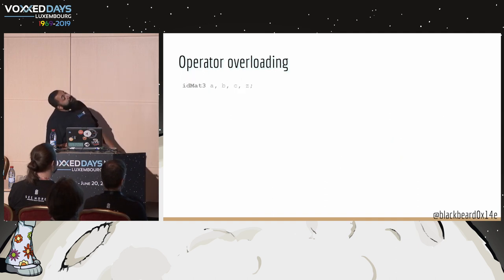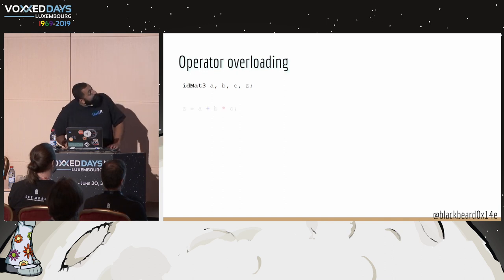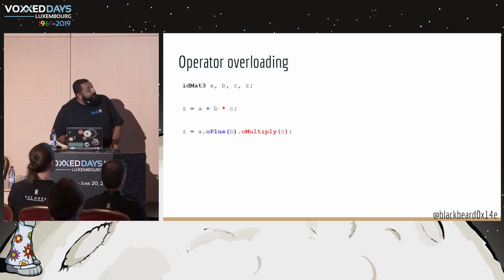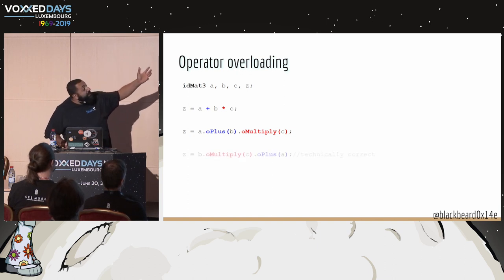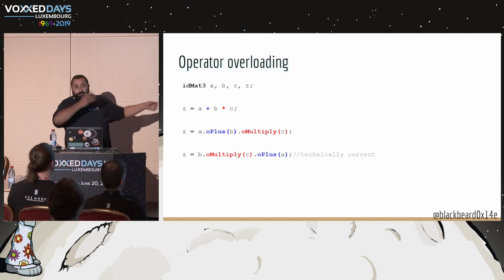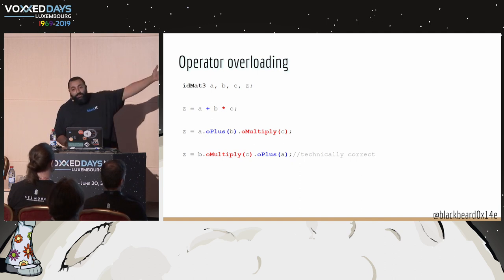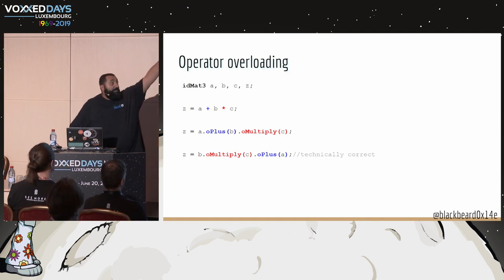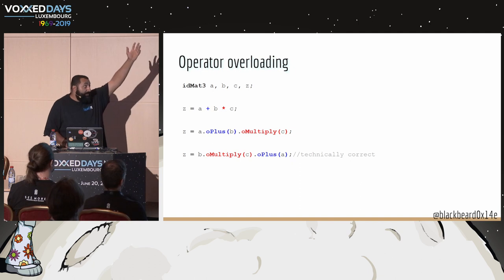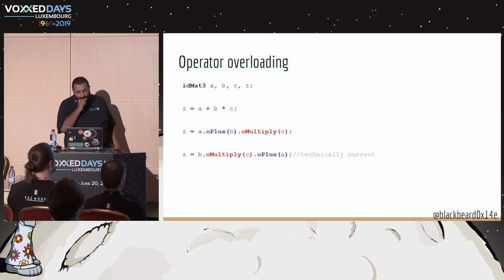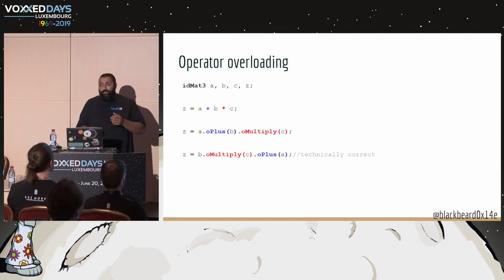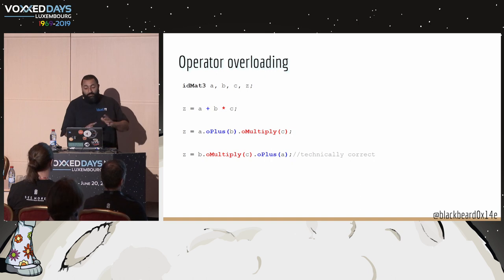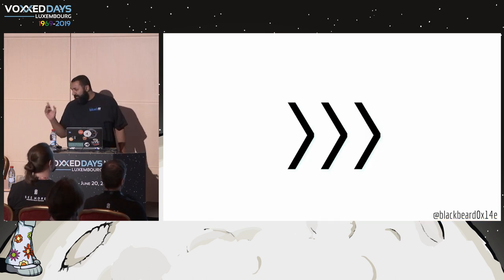A simplified version: if you write A + B * C with methods, the naive translation is wrong because of operator precedence — multiplication comes before addition. So the correct translation requires extra nesting. Writing it as methods instead of operators is the number one cause of bugs and pain in my whole project. Operator overloading: amazing operator.